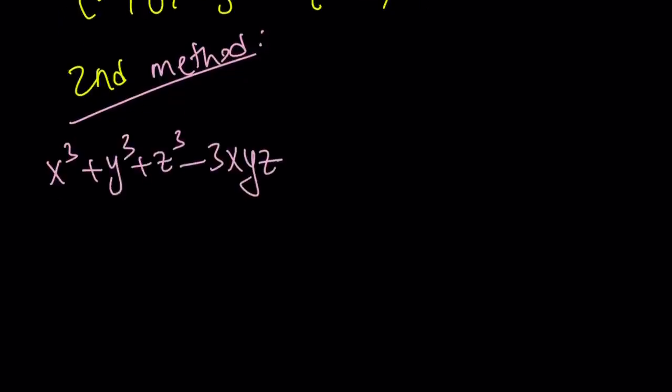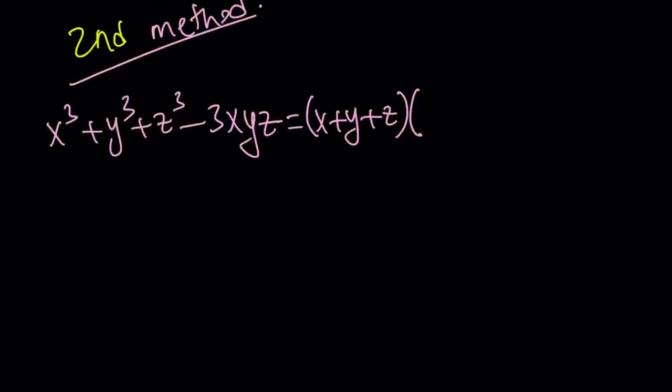As you know, or you should know if you're dealing with algebra, x cubed plus y cubed plus z cubed is factorable. And it contains x plus y plus z as a factor. One of the factors is that. And the other factor is something very interesting: x squared plus y squared plus z squared minus xy minus xz minus yz.